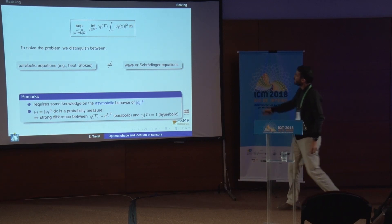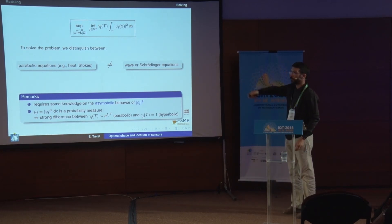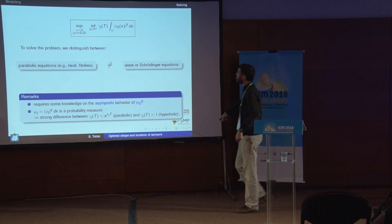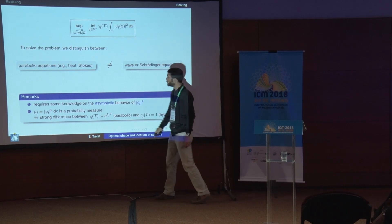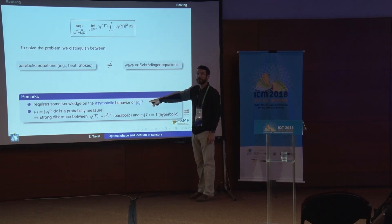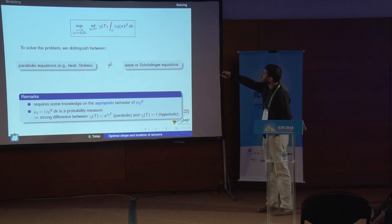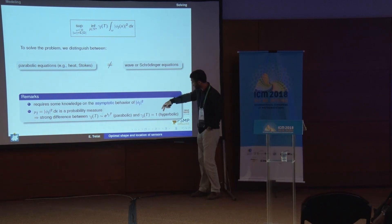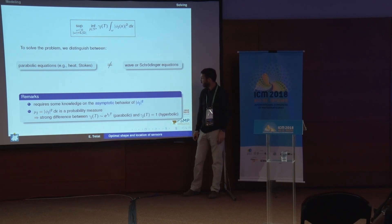We can expect we will need knowledge on the asymptotics of phi_j squared. Also the weights gamma_j against the integrals play a role — they are very different depending on whether you consider parabolic equations, where gamma_j grow exponentially, or wave and Schrödinger equations, where gamma_j are just equal to one.